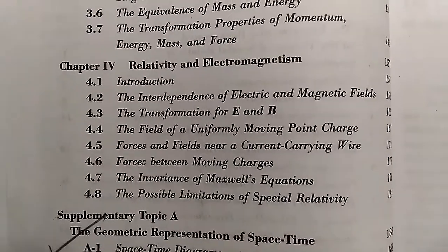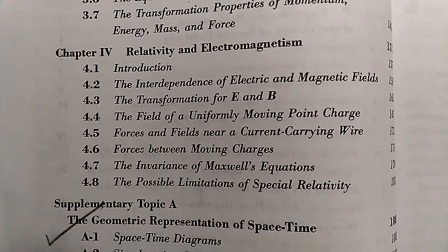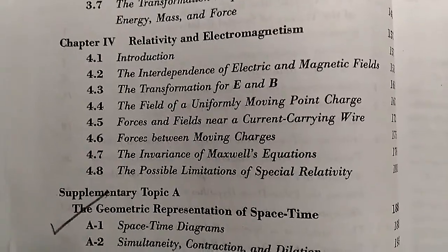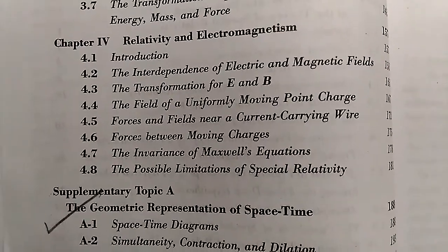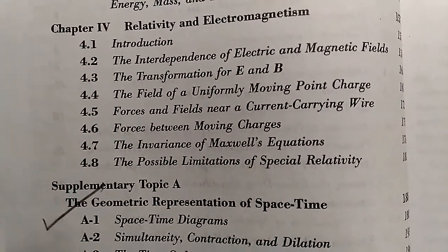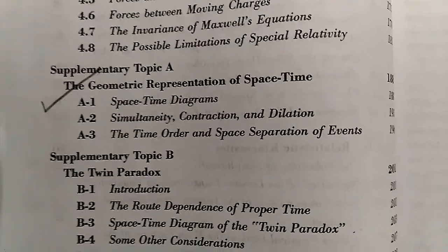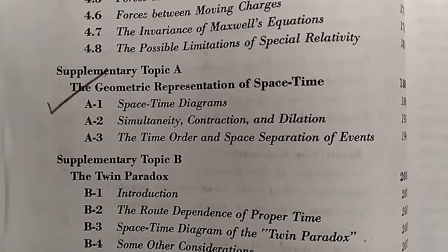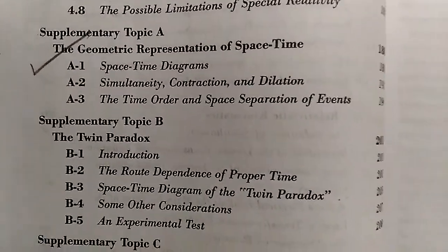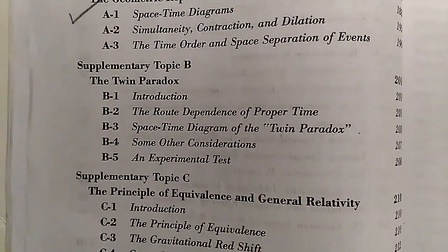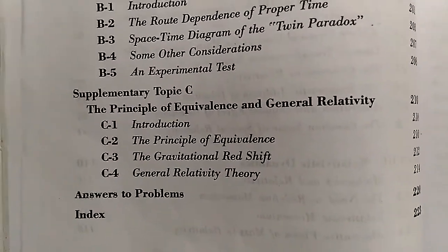Then the fourth chapter is relativism and electromagnetism, which has the interdependence of electric and magnetic fields, transformation for E and B fields, the field of the uniform moving point charge, and then Maxwell's equations. Then there are some limitations of relativity, supplementary topics like geometric representation of space-time, space-time diagrams, simultaneity contraction and dilation, the time order and space separation of events, the causality principle, the twin paradox, and the principle of equivalence and general relativity.